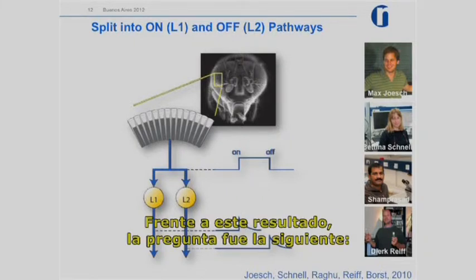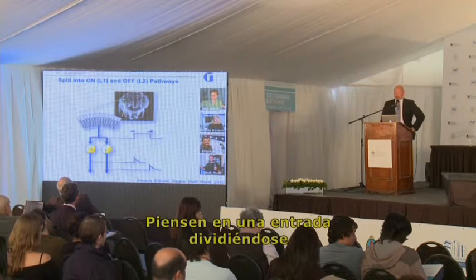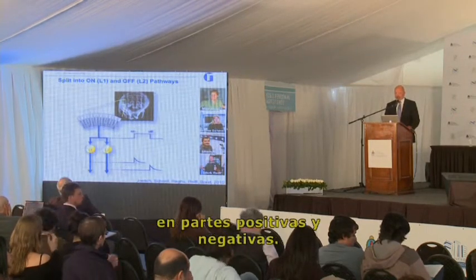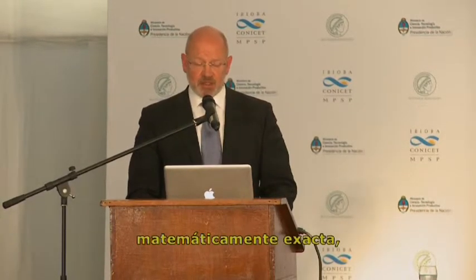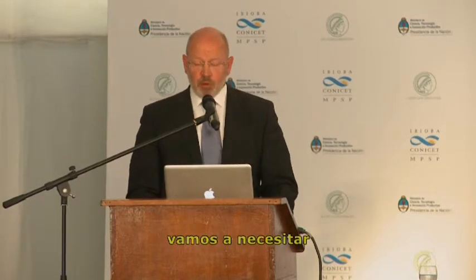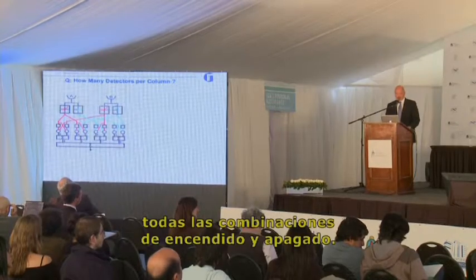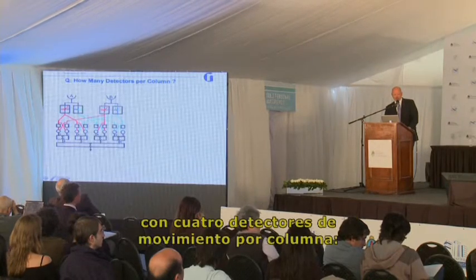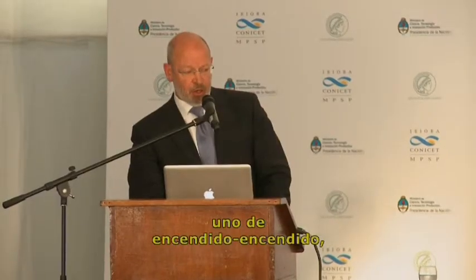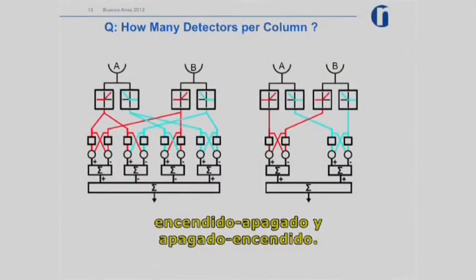As soon as we had this result, the next question was: how many motion detectors are we dealing with? If the input is split into positive and negative parts, a mathematically exact multiplication would require four interactions — all combinations of on and off signals: on-on, off-off, on-off, and off-on. So it was possible we're dealing with four motion detectors per column. Conversely, maybe the fly gets away with just two motion detectors, not obeying the strict sign rule of multiplication, correlating only on-on and off-off.